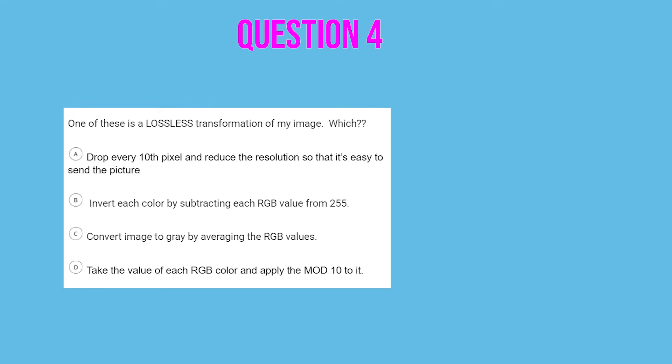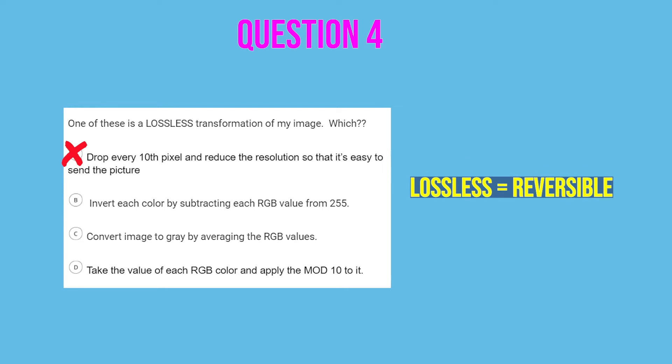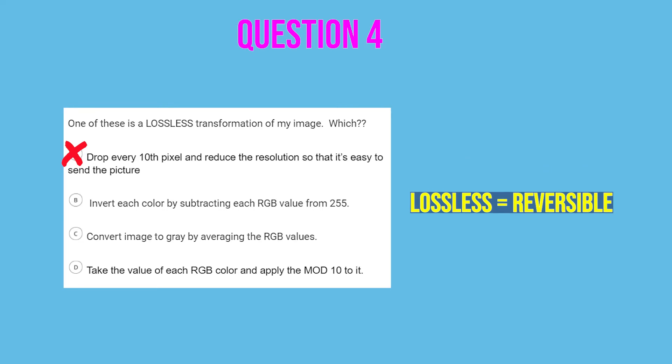Next question: one of these is a lossless transformation of an image — which one? This question really just wants you to know the difference between lossless and lossy. Remember: lossless means reversible. For A, drop every 10th pixel — if you just drop pixels, that's lossy and not reversible. For B, invert every color by subtracting each value from 255. Is this reversible? Yes, because to get the original value you would subtract your new value from 255 again. So it is reversible, which means it's lossless. The answer is B.